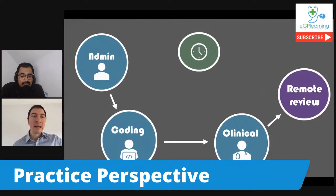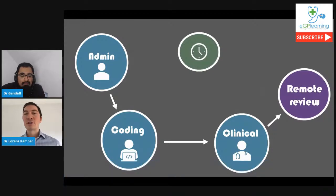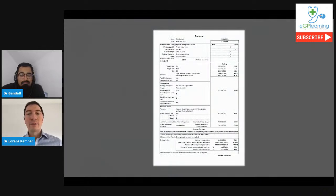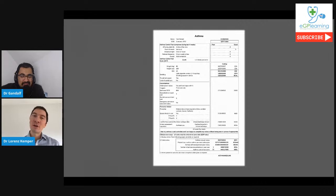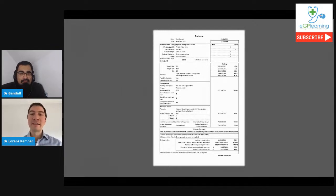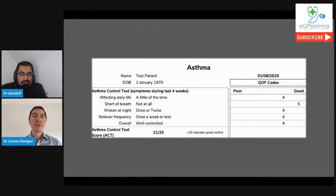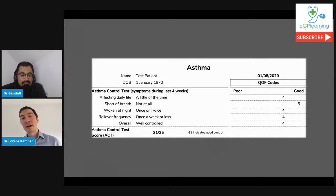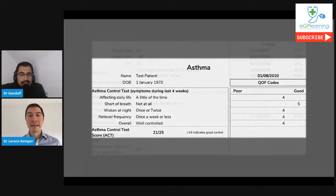The typical workflow is: the MedLink arrives at the practice, gets attached to the record, coding happens, a clinician reviews it, and it's actioned. To simplify this we provide a single A4 summary — free text and patient answers on the left, corresponding codes on the right. It's easy to read.